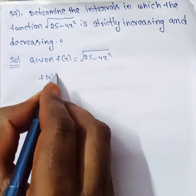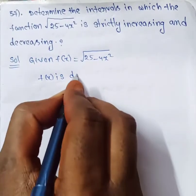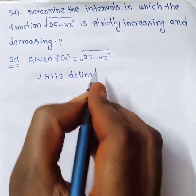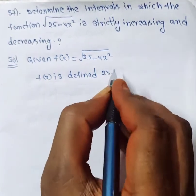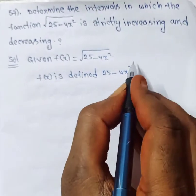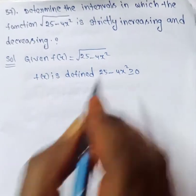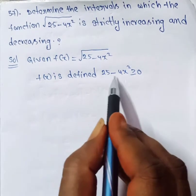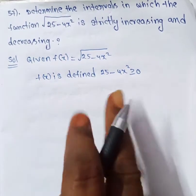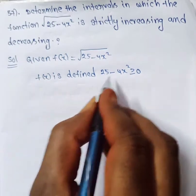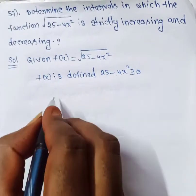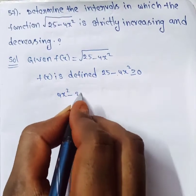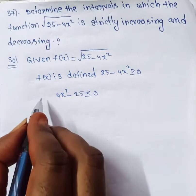f(x) is defined when 25 − 4x² is greater than or equal to 0. To find the domain value of this function, the expression inside the square root must be greater than or equal to 0. So we need 25 − 4x² ≥ 0.